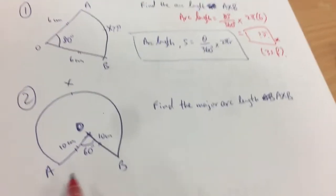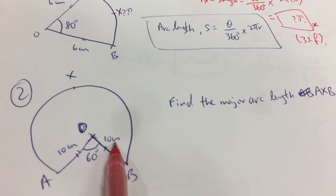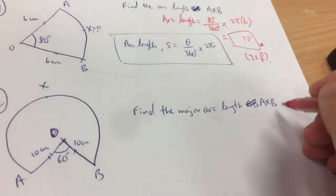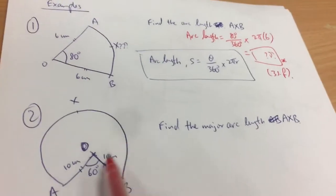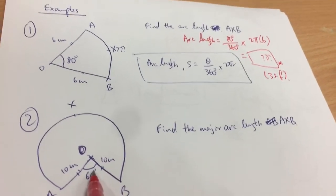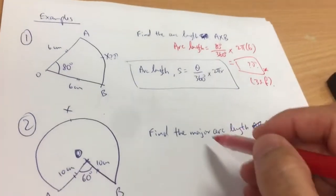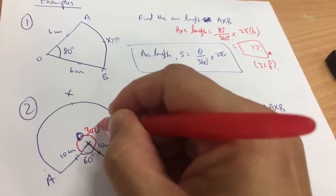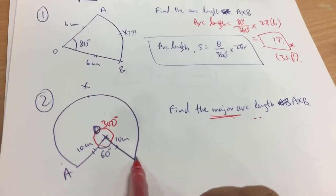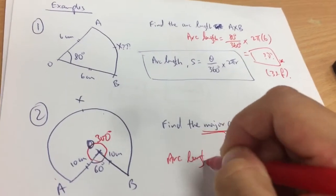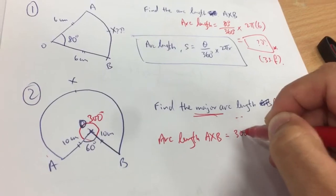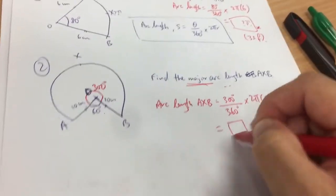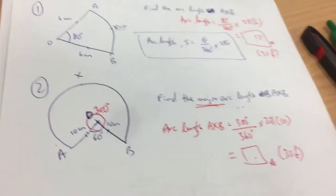Example 2: I have a sector with center O, radius 10, and an angle of 60 degrees. Find the major arc length AXB. Now, the theta given is 60 degrees, but I'm looking for the major arc length. So the major arc corresponds to 360 minus 60 = 300 degrees. Arc length AXB equals 300 degrees divided by 360 degrees times 2πr, where r is 10. Punch your calculator and get the answer to 3 significant figures.